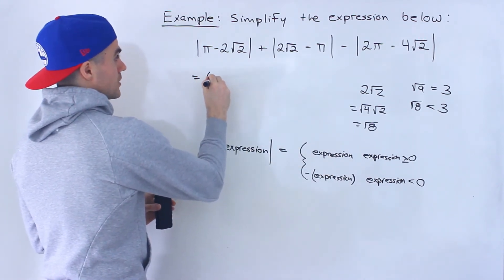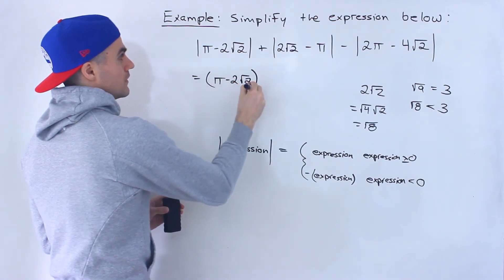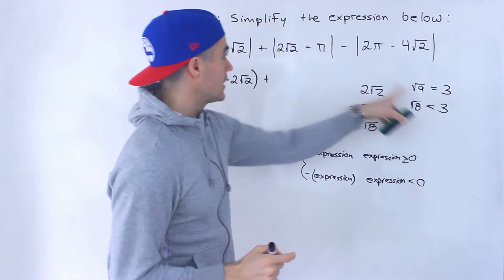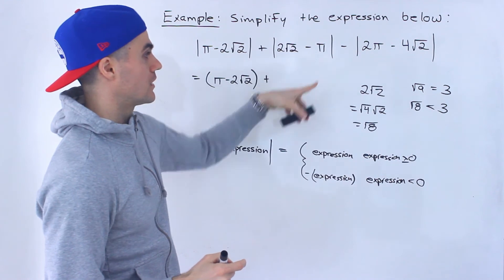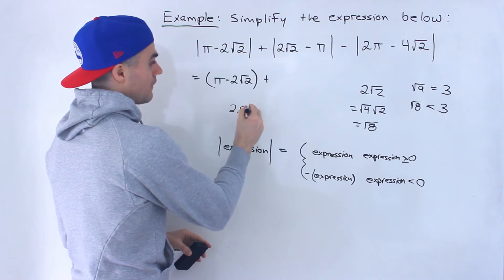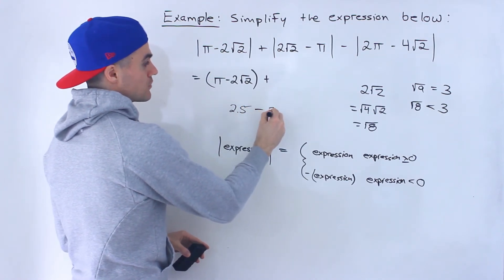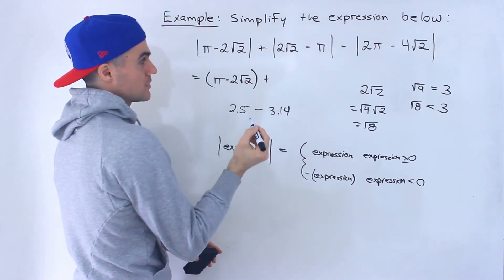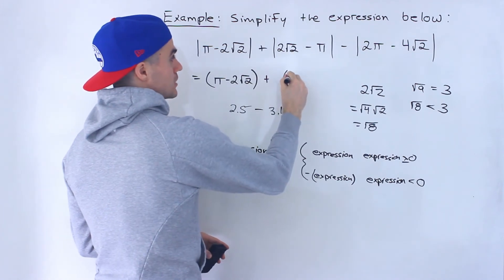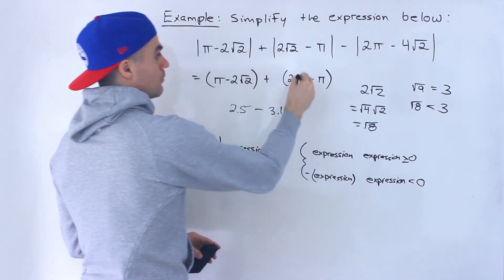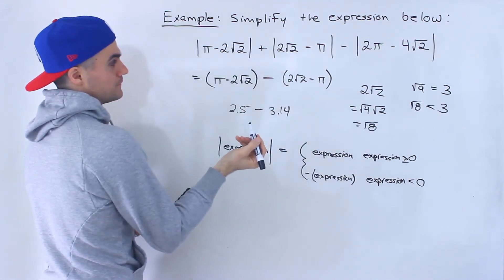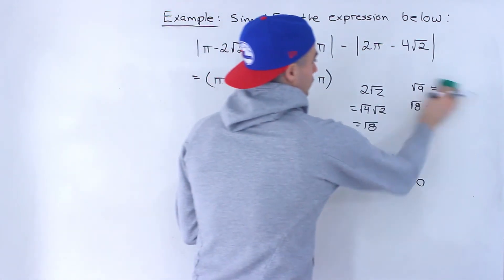So this first absolute value we just leave as is — it stays as pi minus 2 root 2. For the second expression, 2 root 2 minus pi, notice that's a number less than 3 minus 3.14, which is going to be negative. So we take 2 root 2 minus pi and multiply it by negative 1, putting a minus 1 in front.